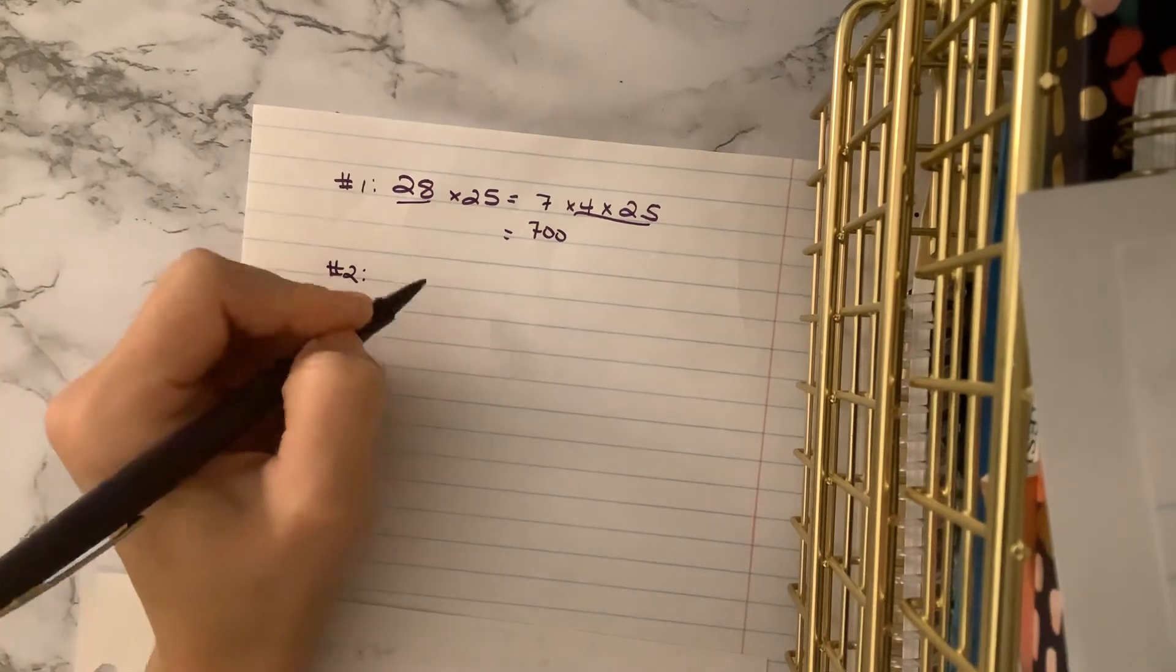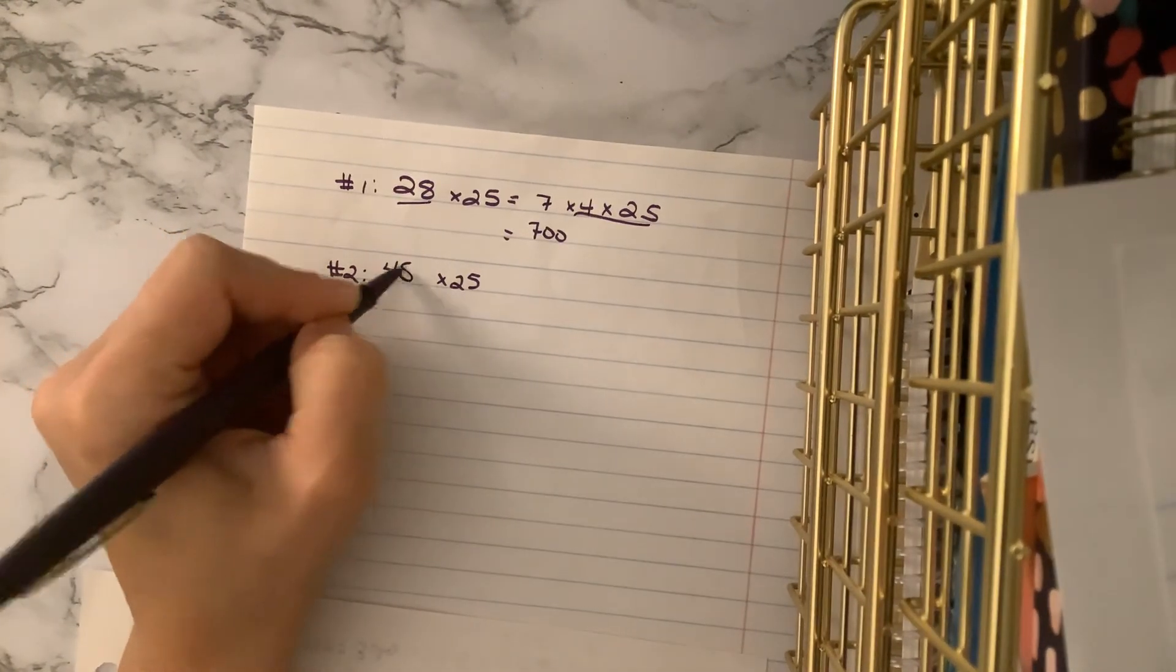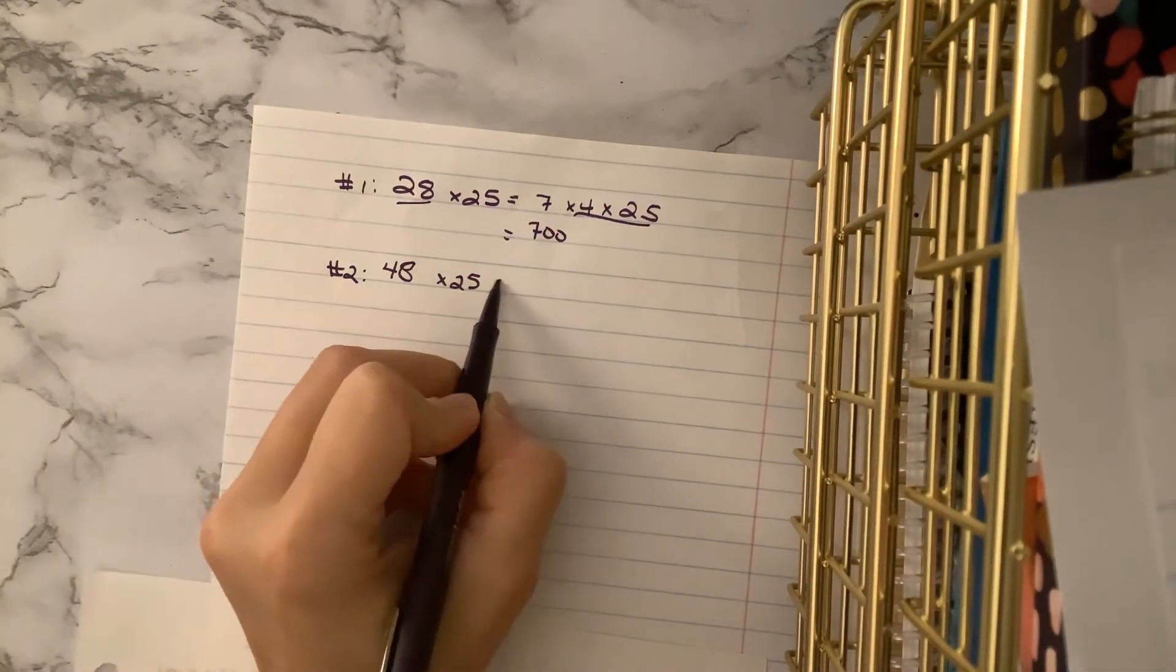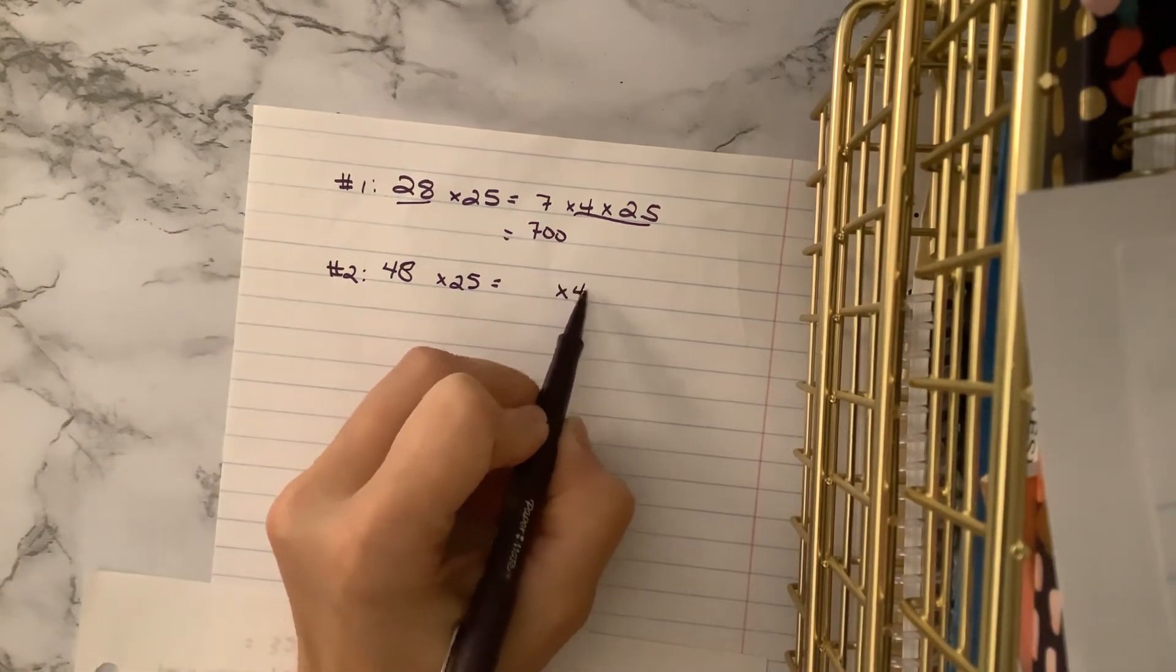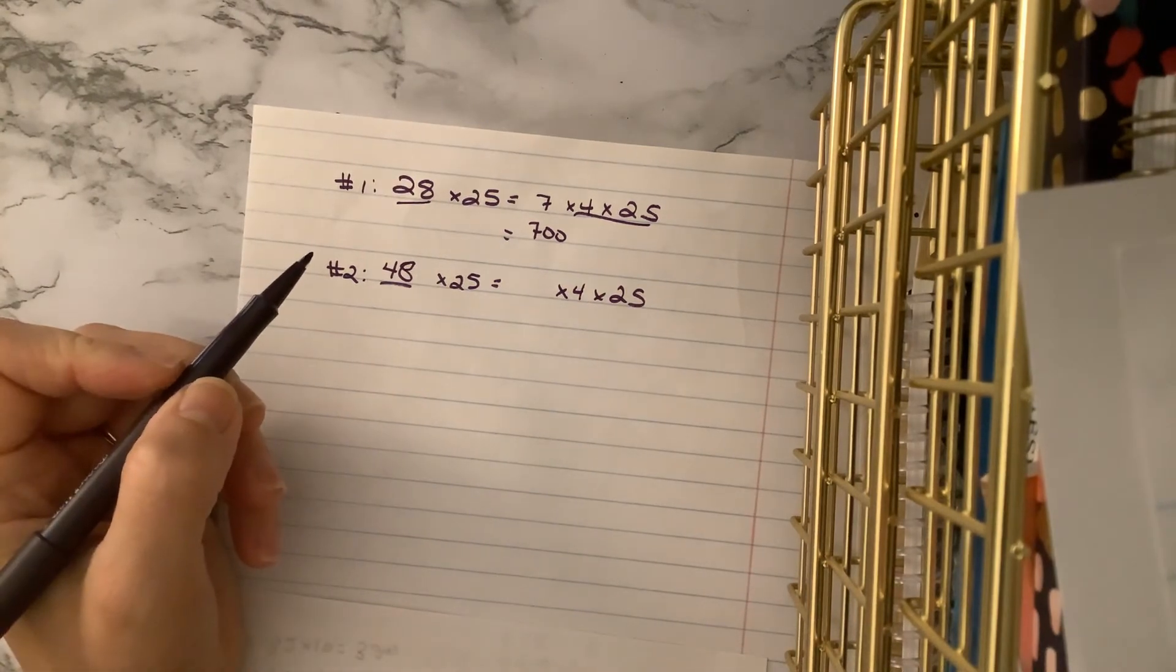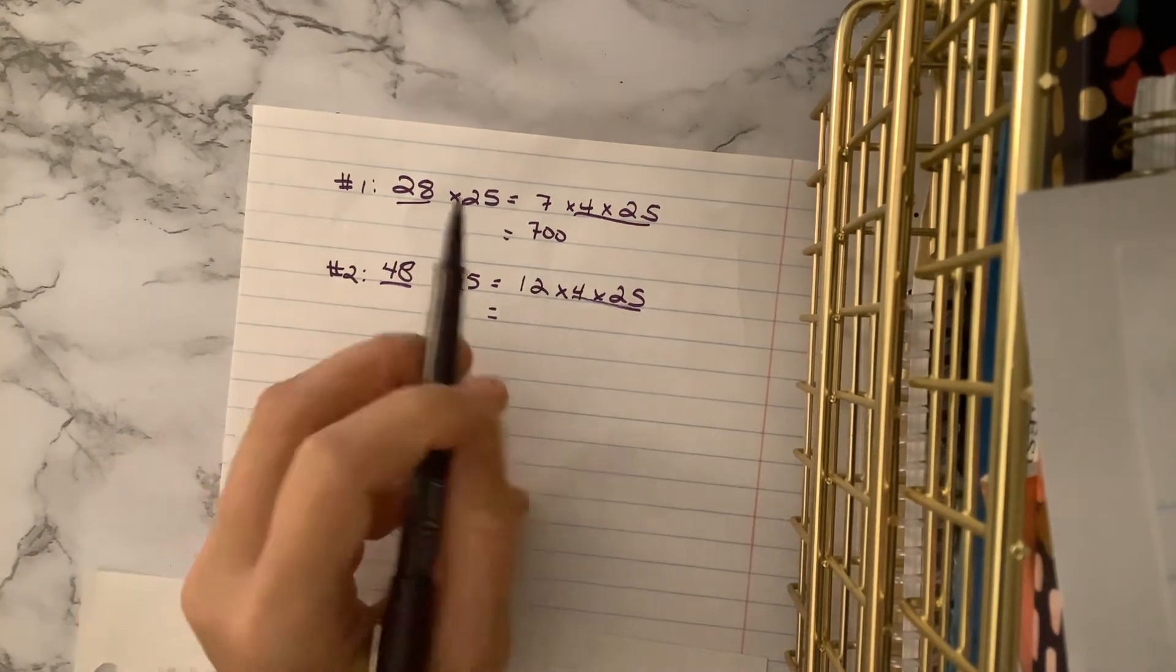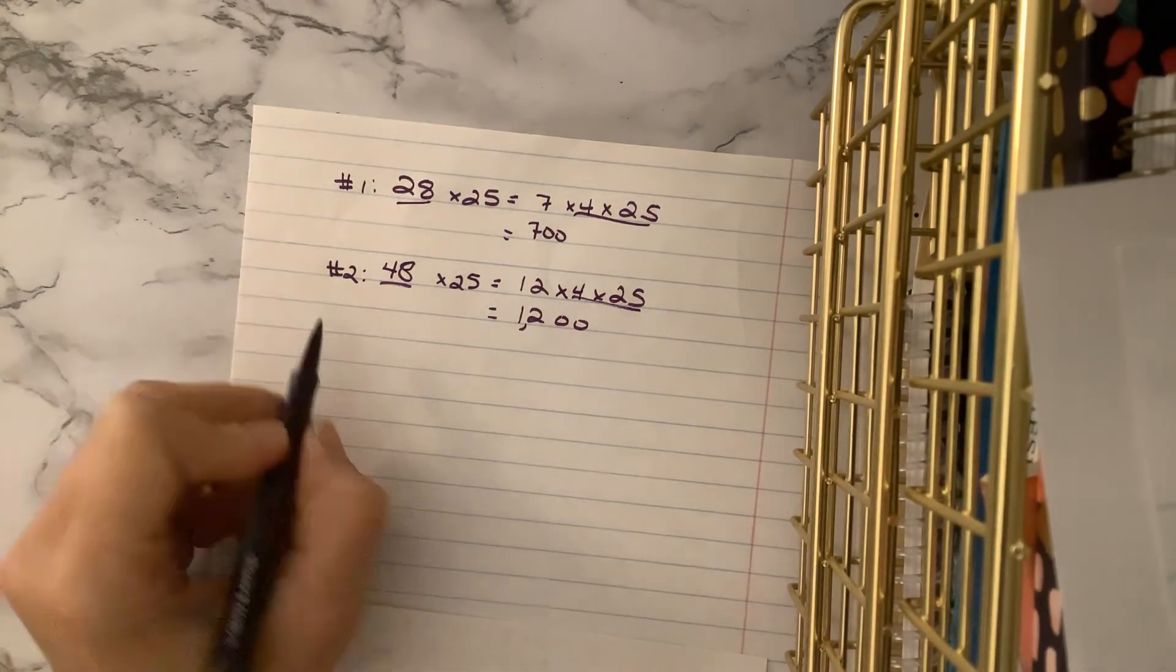If you haven't paused yet, go ahead and try to pause this one. Let's do 48 times, that's an 8, I know it doesn't look like it. 48 times 25. So pause and try it. Remember the goal is always 4 times 25. So what times 4 is 48? And you should have found 12. 4 times 25 is 100, so 12 times 100. We add those two zeros to get 1,200.